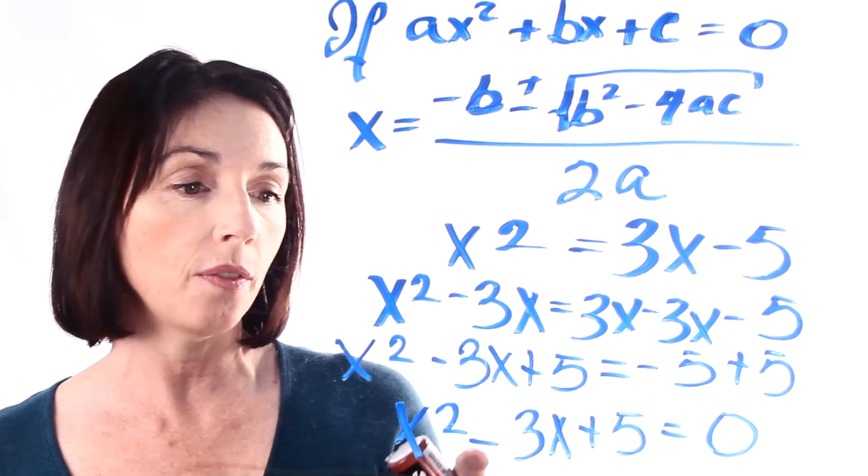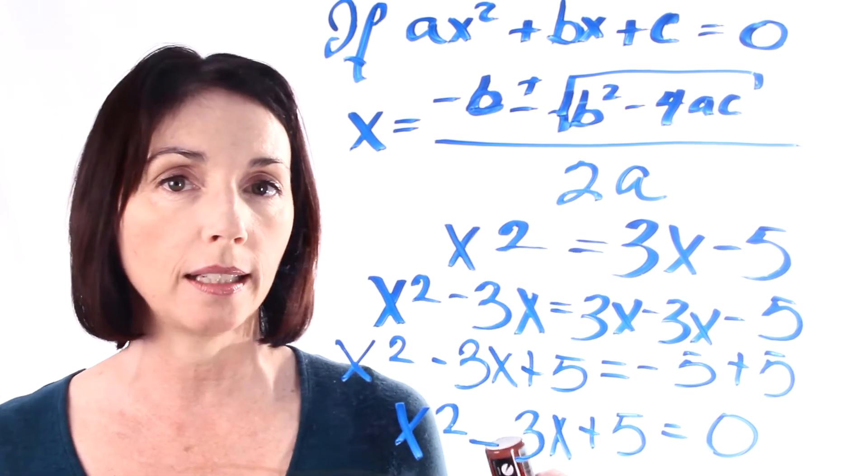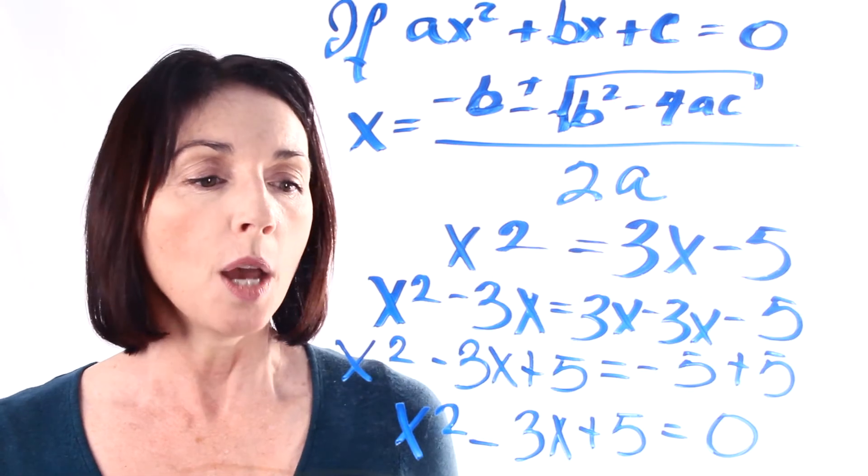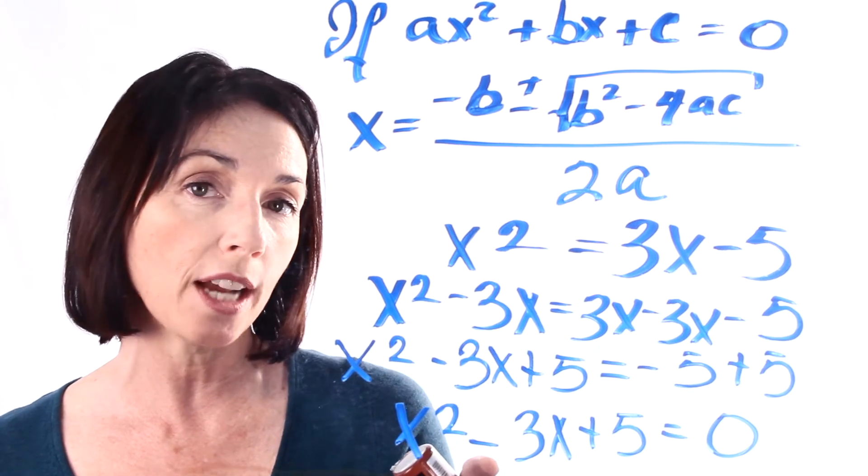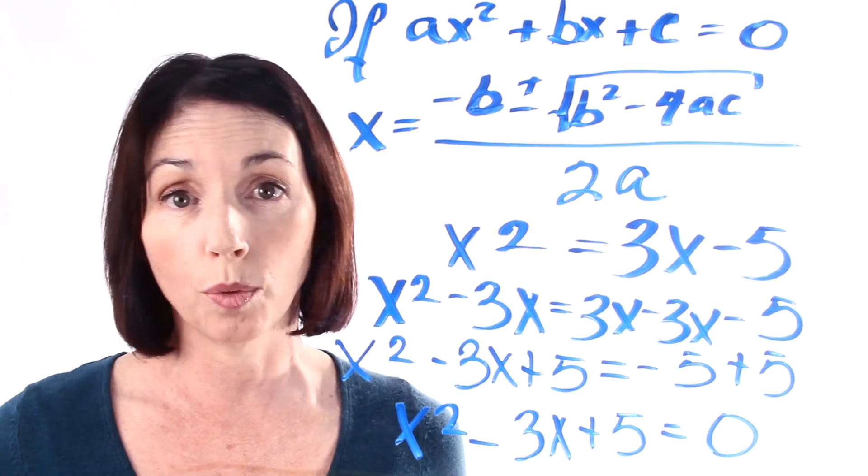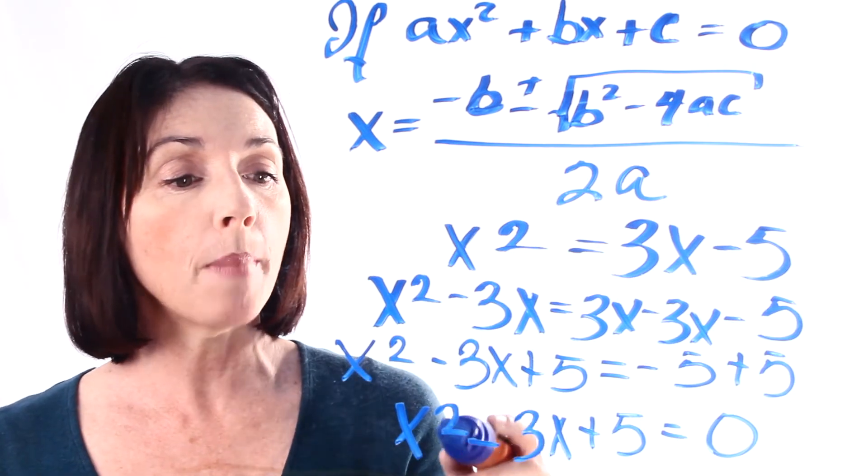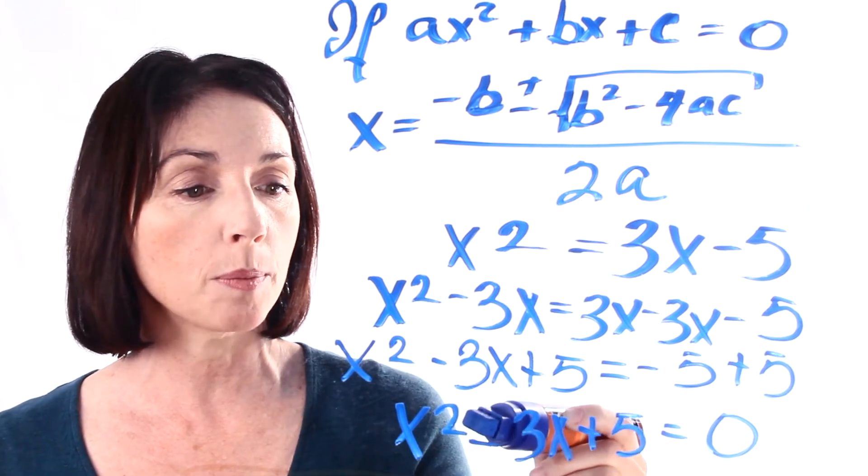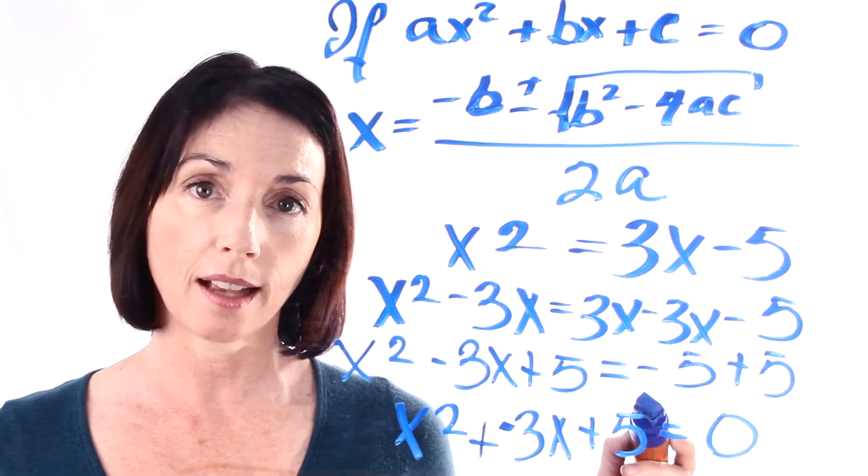Now I know we have a minus sign here and a plus sign here, but that's really okay because we can always change subtraction into addition by just changing the sign of whatever we're subtracting. So minus 3x is the same as plus negative 3x.